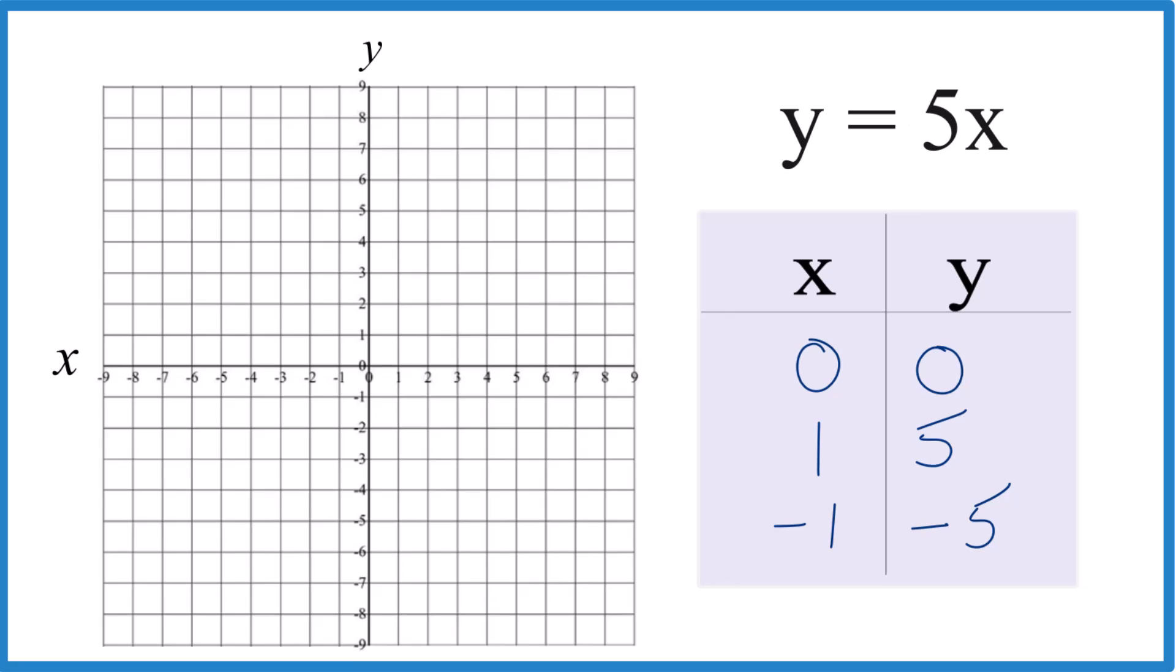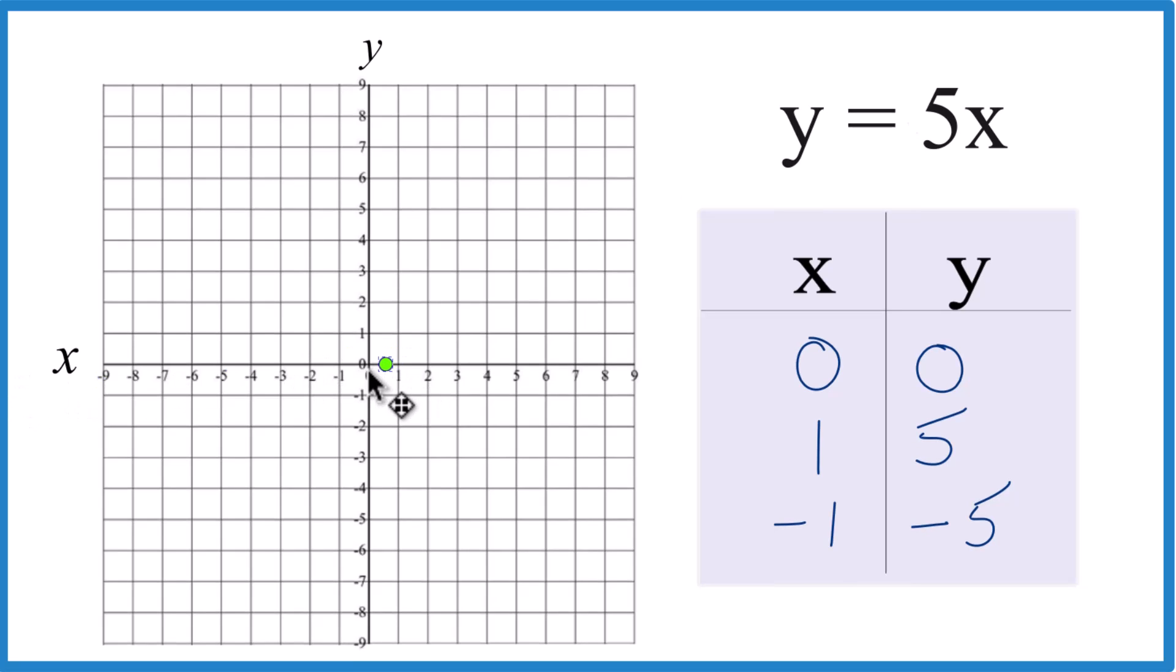So let's graph it. We have 0, 0 right here. Then we have x is 1, and y is 5, and then down here we have x is negative 1, and y is negative 5.